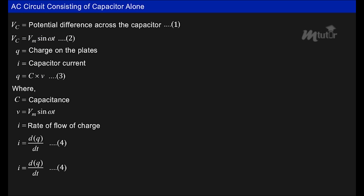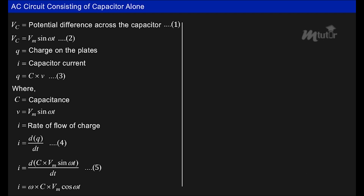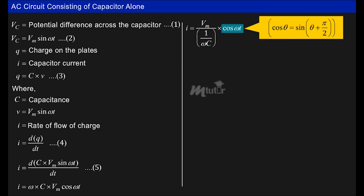Substituting Q = C·Vm sin ωt into I = dQ/dt, we get I = d/dt of (C·Vm sin ωt). On differentiating, we get i = ω·C·Vm cos ωt. This can be rewritten as i = Vm / (1/ωC) · cos ωt, and expressed in terms of sine as i = Vm / (1/ωC) · sin(ωt + π/2).